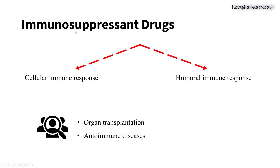Moving on to the basics of immunosuppressant drugs: immunosuppressant drugs are those which suppress cellular immune response alone, humoral immune response alone, or sometimes both cellular and humoral immune responses. We study these drugs because they are used during organ transplantation to prevent rejection, as well as in autoimmune diseases.